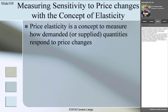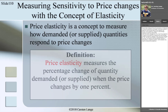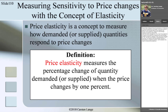Economists measure the price sensitivity of demand or supply with the concept of elasticity. Price elasticity of demand measures the percentage change of quantity demanded when the price changes by 1%. For price elasticity of supply, it measures the percentage change of quantity supplied when the price changes by 1%. The price change is standardized to 1%, and then we measure the percentage change in demanded or supplied quantity. Whatever the result is, is called price elasticity.